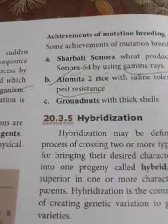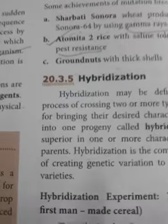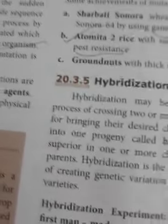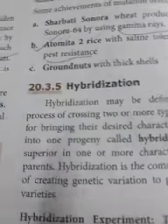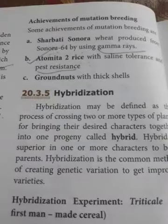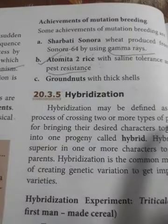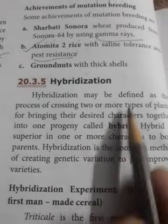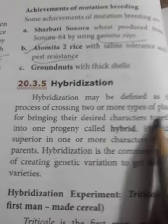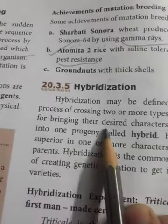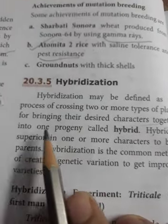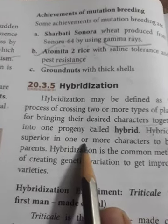Now the next part we are going to discuss is hybridization — you may already know this from 9th and 12th. Hybridization may be defined as the process of crossing two or more types of plants for bringing their desired characters together in one progeny.